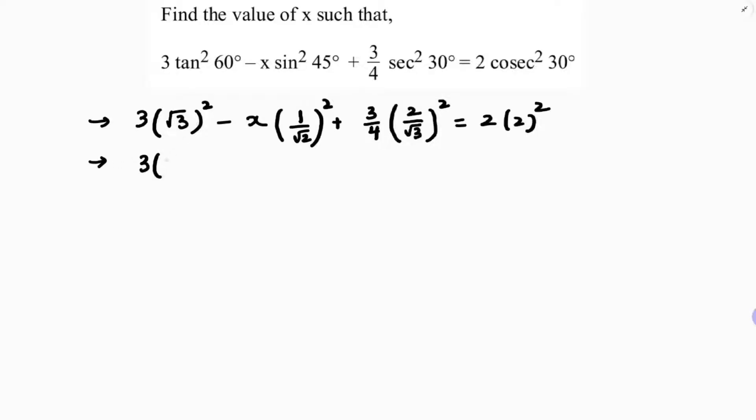So 3(√3)² is 3 times 3 minus x times 1/2. 1/2 because 1² is 1, (√2)² is 2 here, plus.